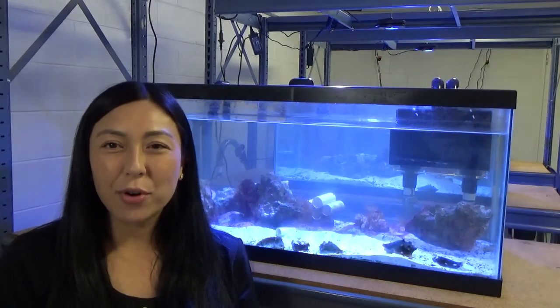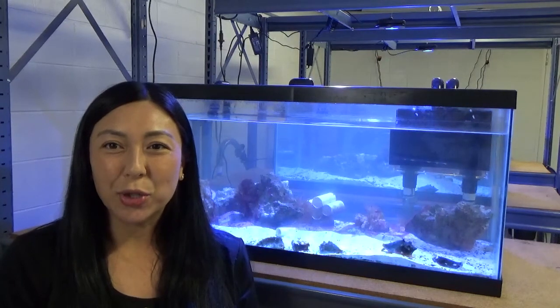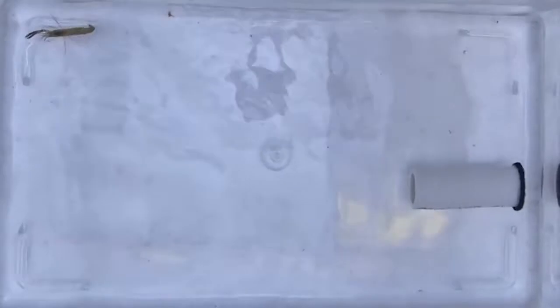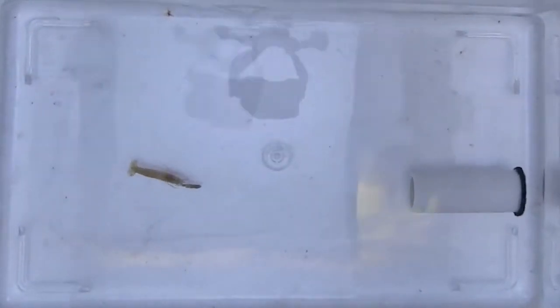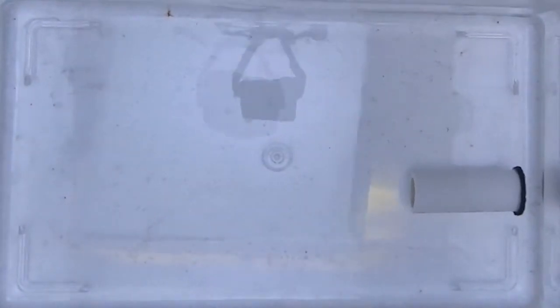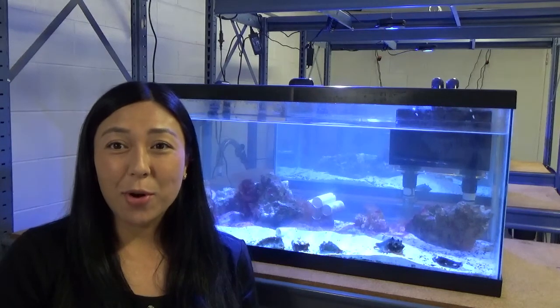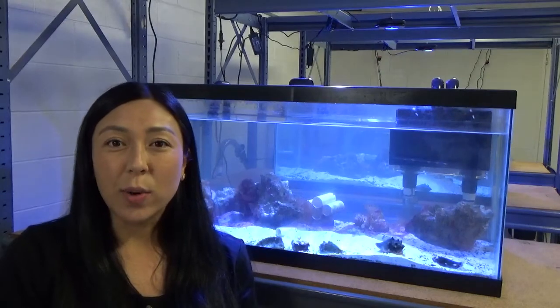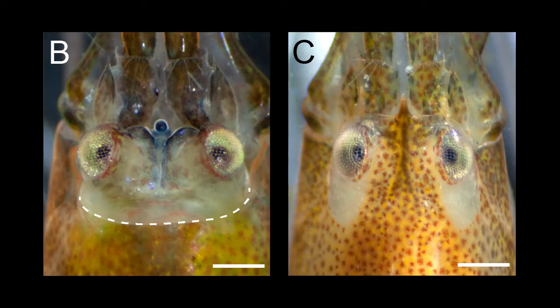To perform our behavioral trials, we asked if snapping shrimp can seek shelter normally without experiencing disorientation or loss of motor control following exposure to shockwaves. Snapping shrimp are very motivated to seek shelter, so we give them these artificial burrows in order to ask this question. We use groups of snapping shrimp that either had their orbital hoods surgically removed or that had their orbital hoods unaltered.